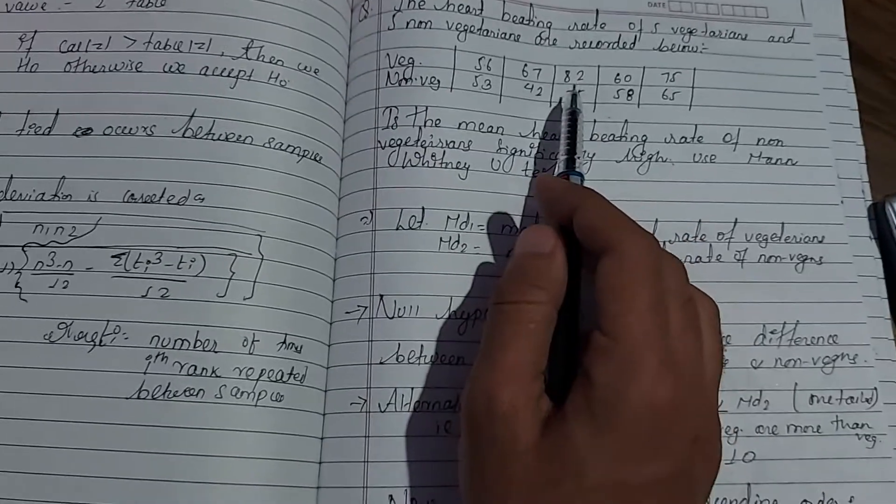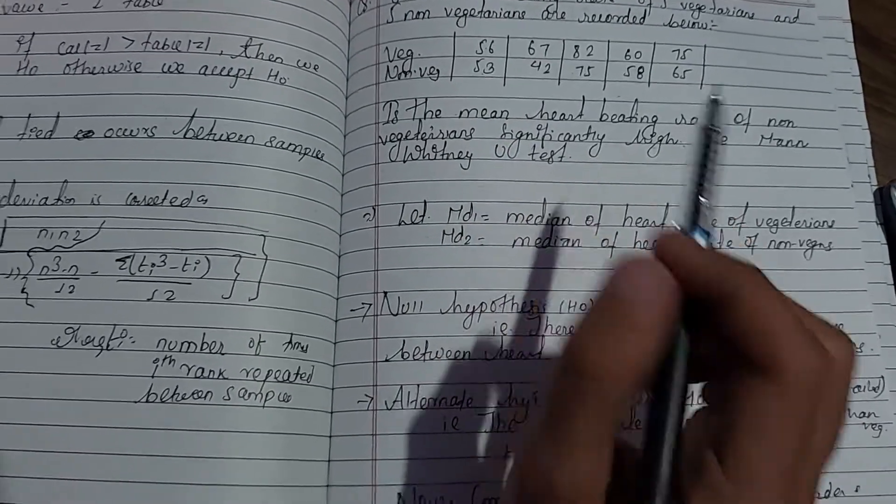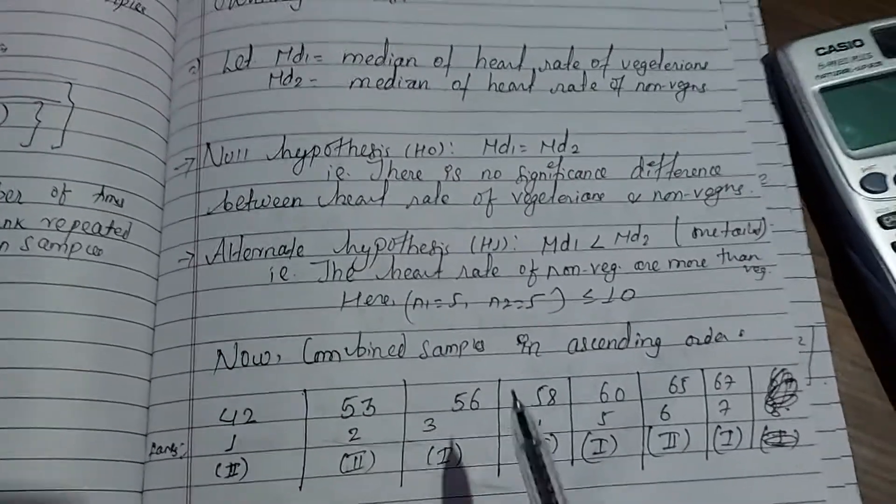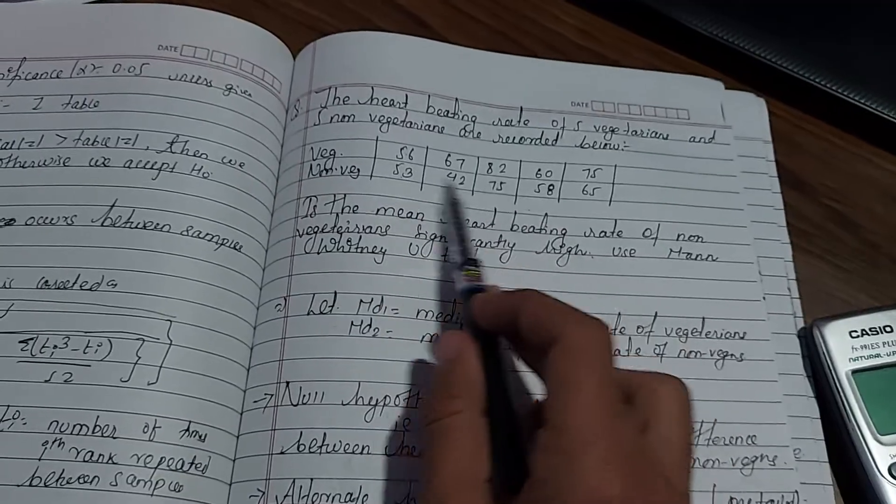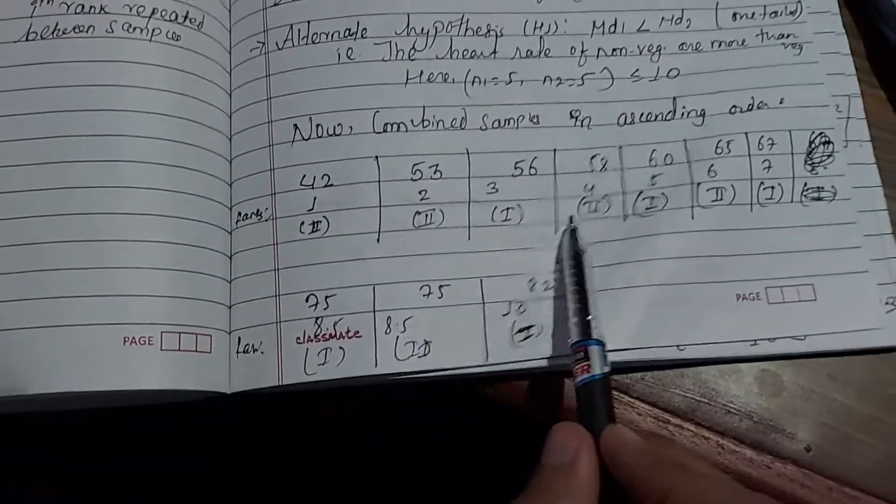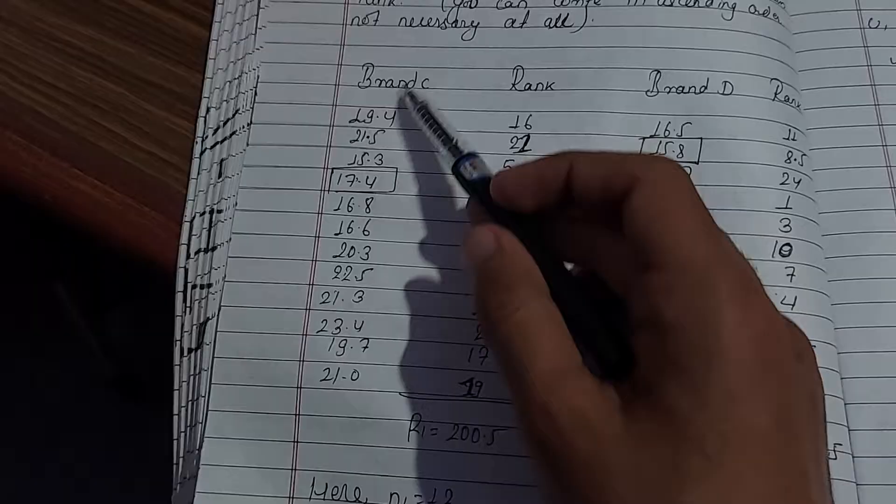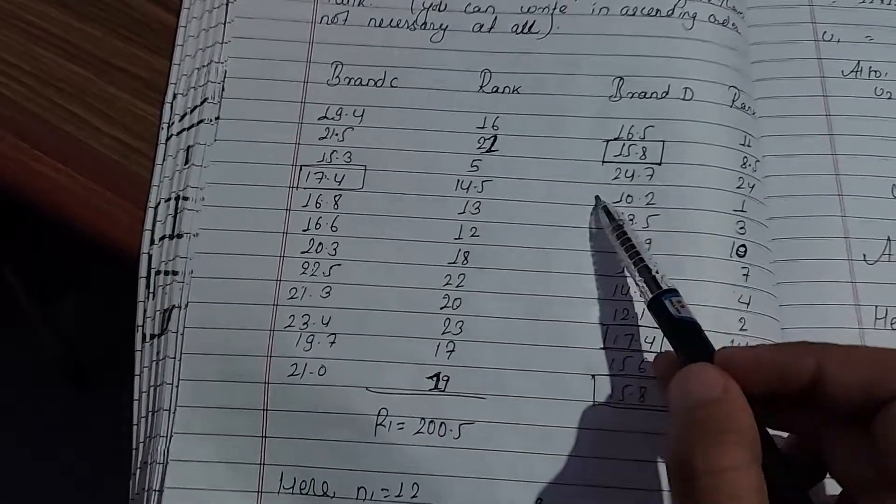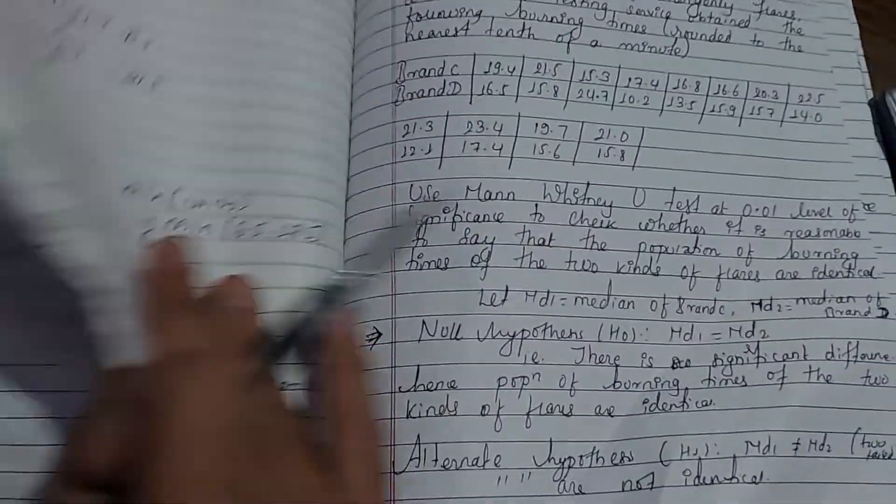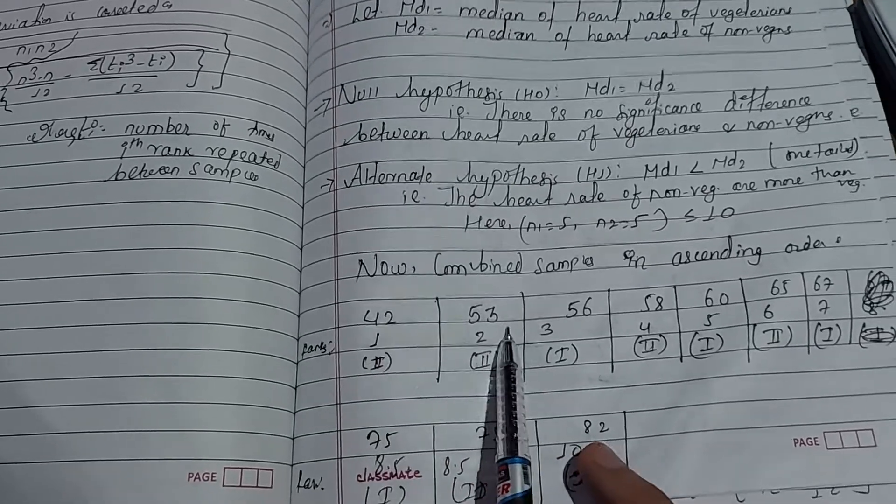Now I'll combine both samples and rank them. I'll put all the data values together and arrange them in ascending order. The values in ascending order are: 53, 56, 58, 63, 65, 67, 72, 75, 82.